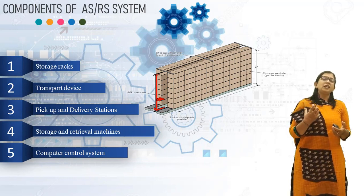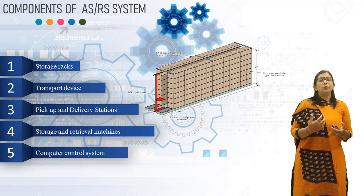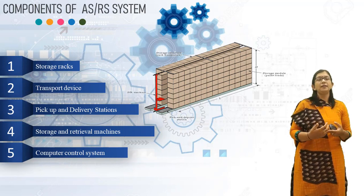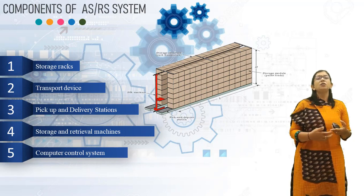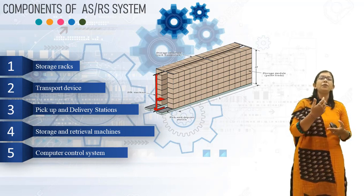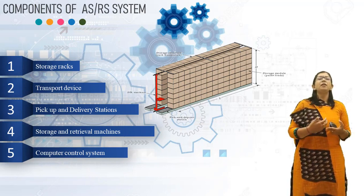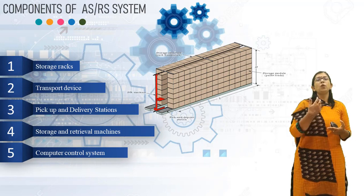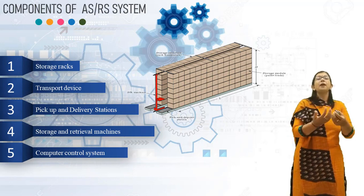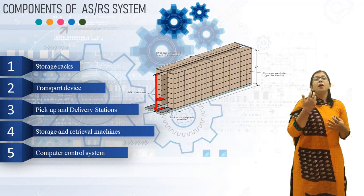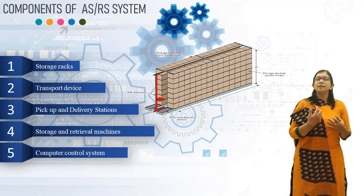The next component is the Transport Device. Generally, Automated Guided Vehicles or conveyors are used as transport devices. The storage structure where material or items are stored is linked to the shop floor by transport devices like AGVs or conveyors. The incoming material items are first stored and loaded onto pallets. The loaded pallets are then passed to a weighing and sizing station to ensure they are within the load and size limits.